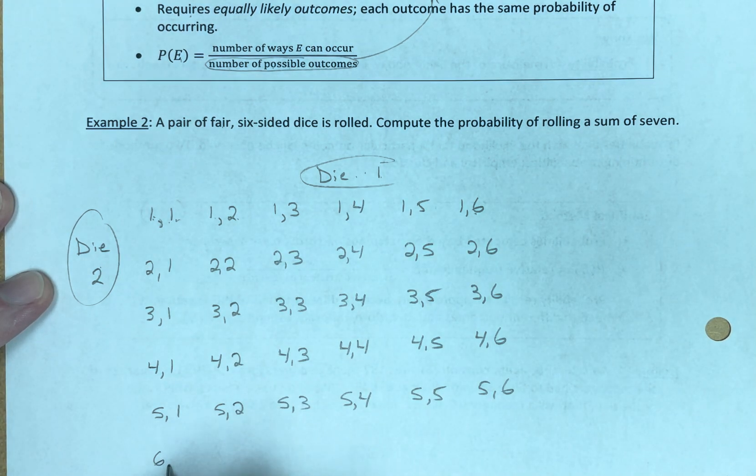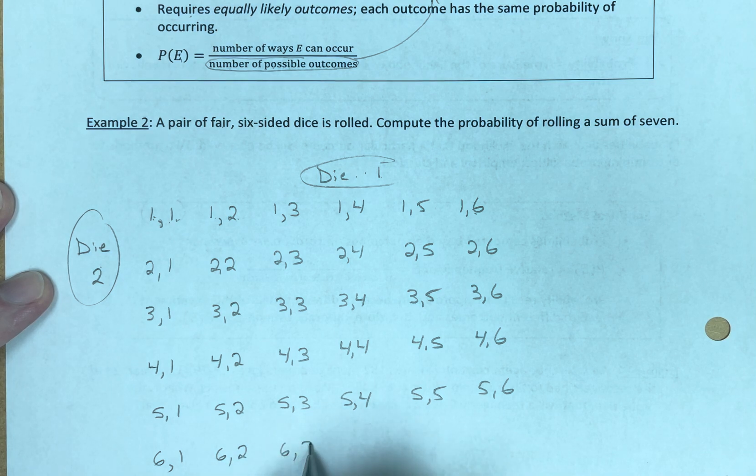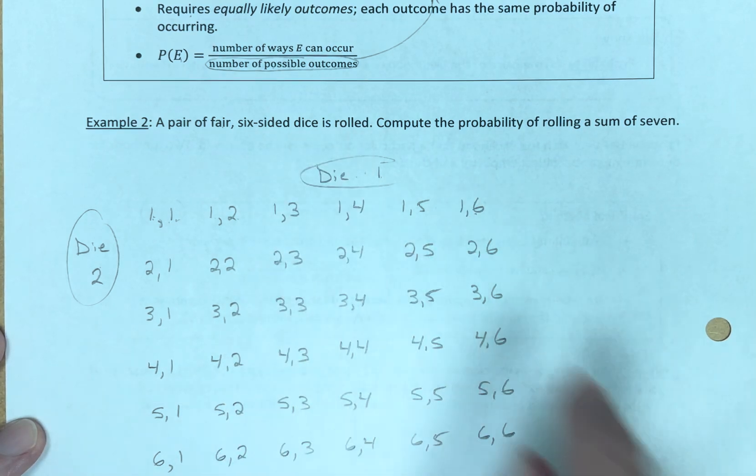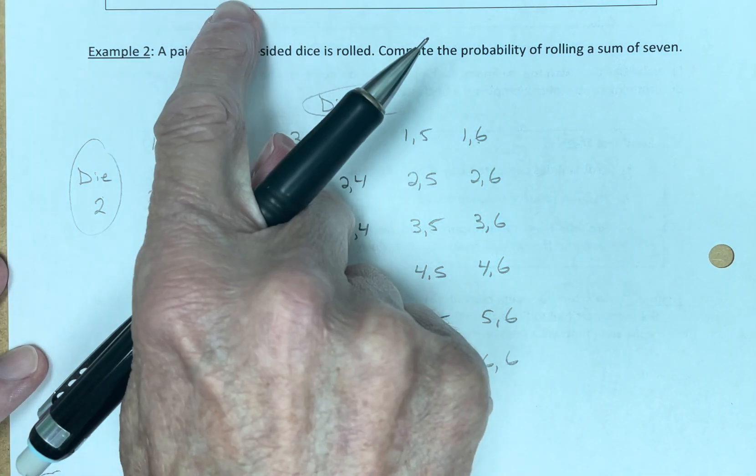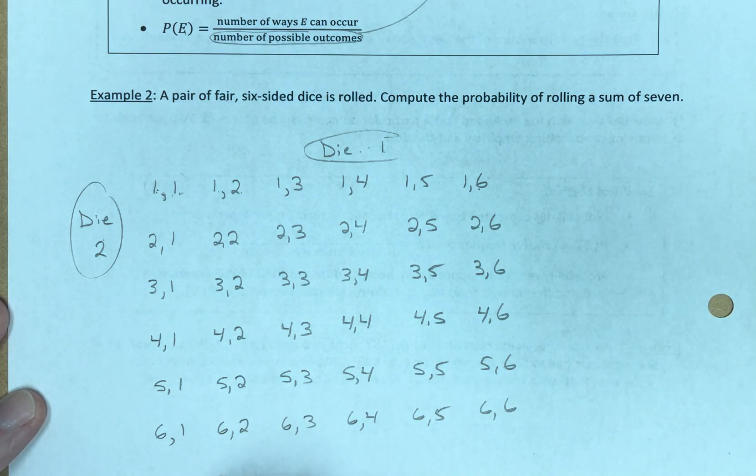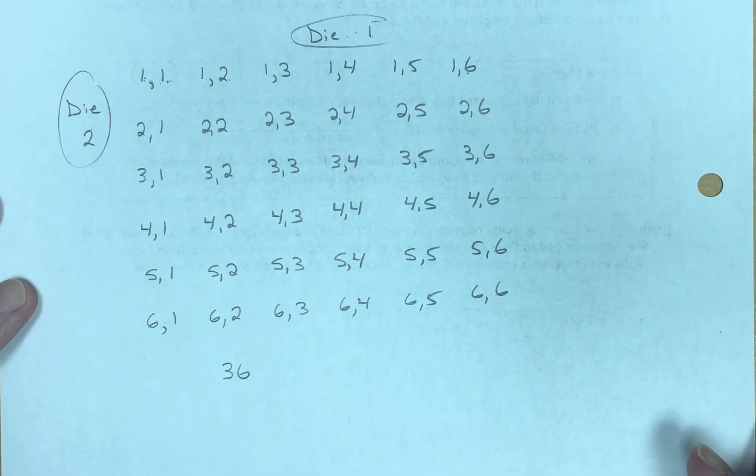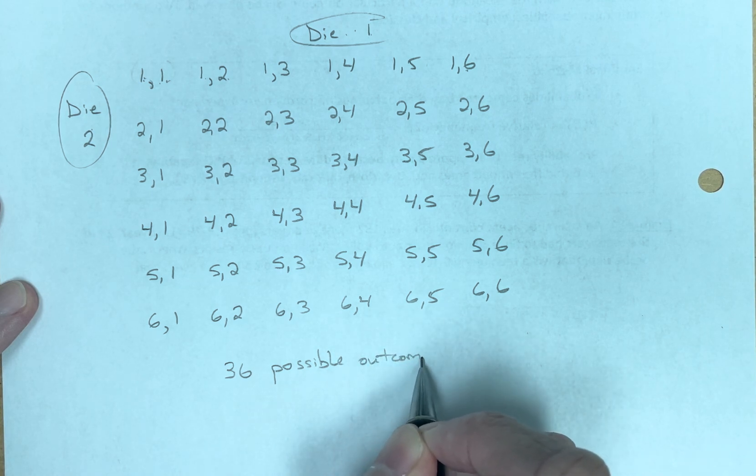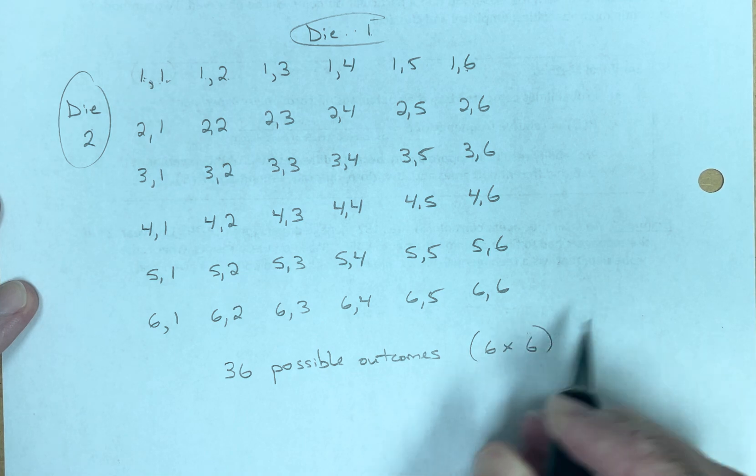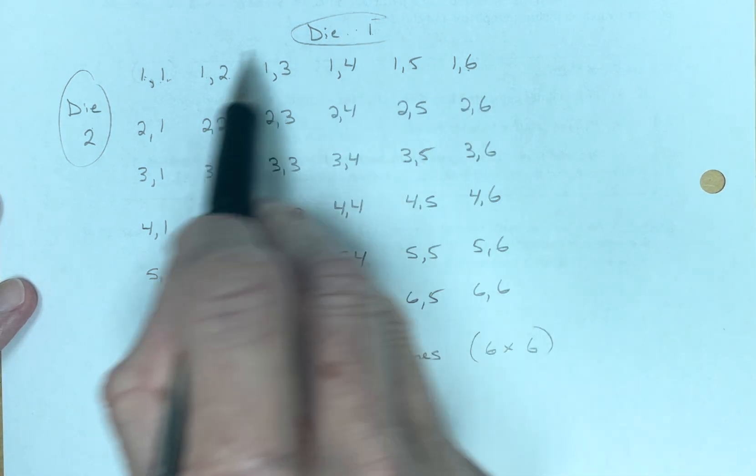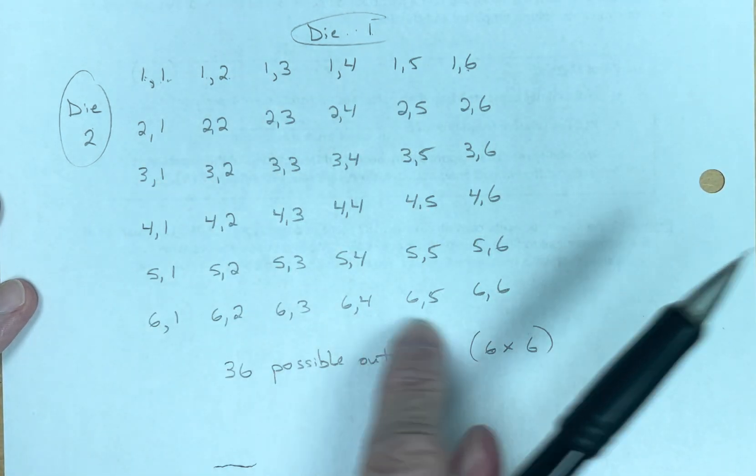And finally, my first die could be a six, and my second die could be a one through six. So, a pair of fair six-sided dice is rolled. These are all the possible outcomes. Number of possible outcomes. Mathematically, there are 36, I listed them all. There are 36 possible outcomes mathematically. We know that is six times six. Six outcomes from die number one, and six outcomes from die number two means there are 36 possible outcomes, and here they all are listed. This is the sample space of all possible outcomes.